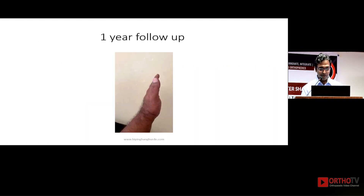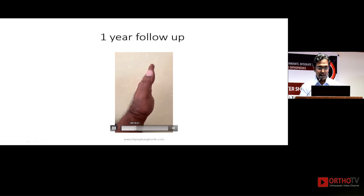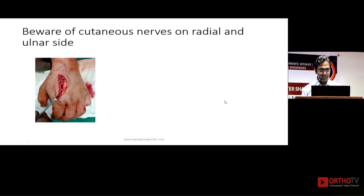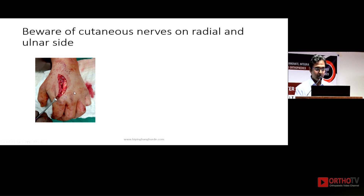At one year follow-up, the patient has a fairly good amount of movement and is able to make a good fist. Always remember that when approaching on the radial side, you have to take care of the radial cutaneous nerve — this is the most important structure, and injury to it during this procedure causes a lot of deficit.